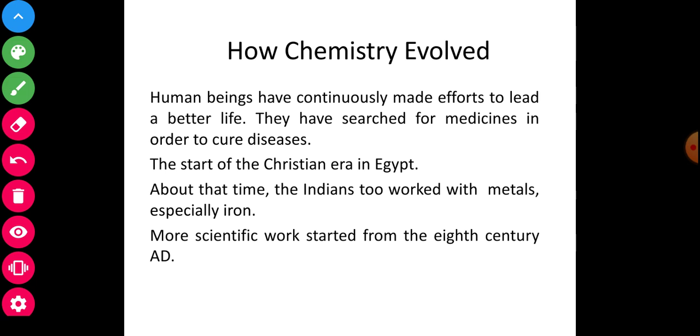How chemistry evolved. Human beings have continuously made efforts to lead a better life. They have searched for medicines to cure diseases. The start of the Christian era in Egypt saw the beginning of chemistry. About that time, Indians too worked with metals, especially iron. They also prepared medicines from herbs and minerals. More scientific work began from the 8th century.